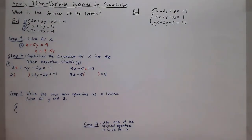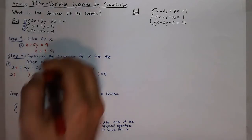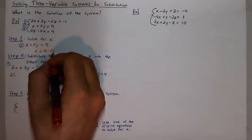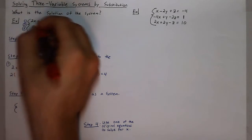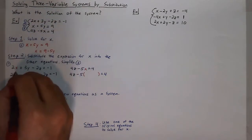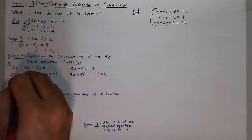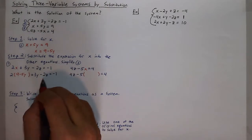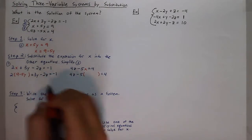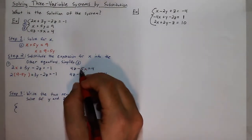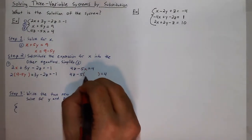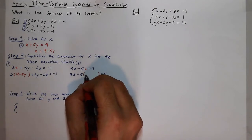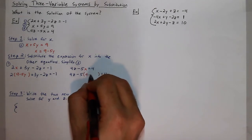It's very important that you don't use the same one. Now plugging in 9 minus 5y into the first equation, I get 2 times (9 minus 5y) plus 3y minus 2z equals negative 1. And plugging it into my third equation, I get 4z minus 5 times (9 minus 5y).